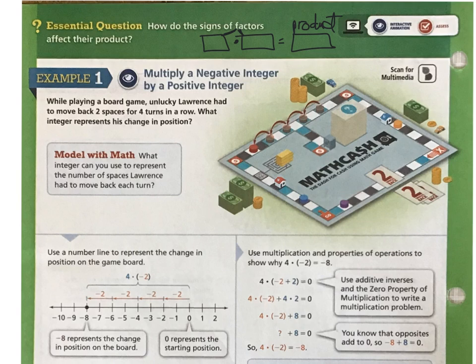Example 1. In this example, we're going to learn about multiplying a negative integer by a positive integer. While playing a board game, unlucky Lawrence had to move back two spaces for four turns in a row. What integer represents his change in position?